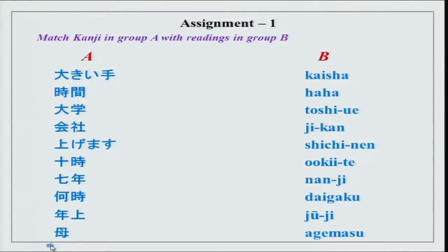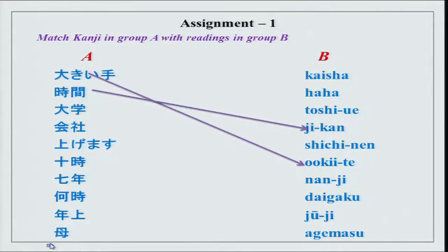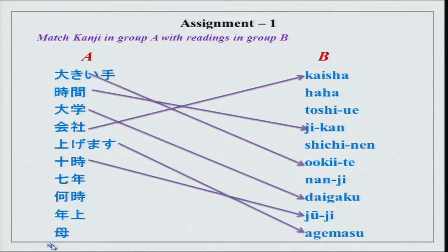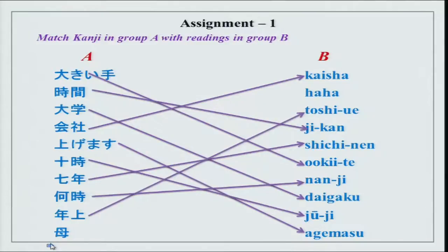Match group A with group B. In group A we have the kanji characters; group B is the readings in roman script. We have: Okiite, Jikan, Daigaku, Kaisha, Ageru, Jiuji, Shichinen, Nanji, Toshiue, and Haha. Haha can also be okasan. You have your kanjis done.